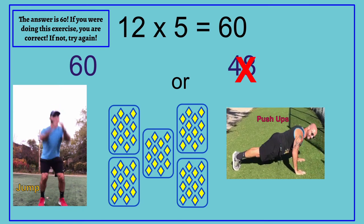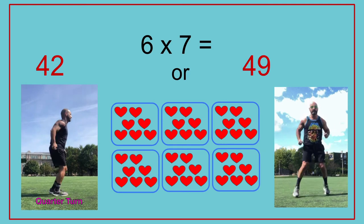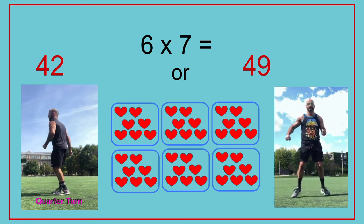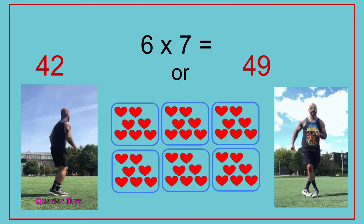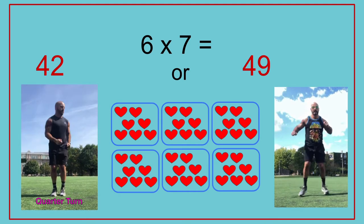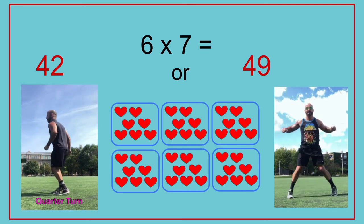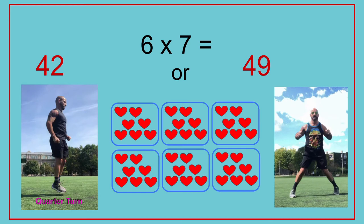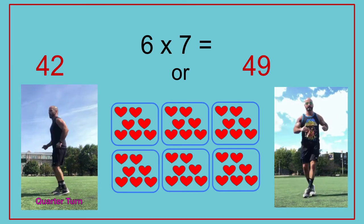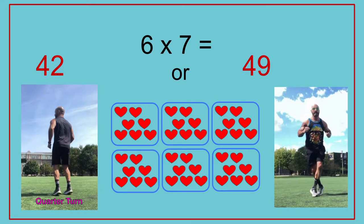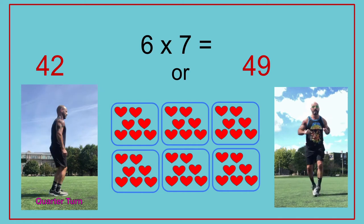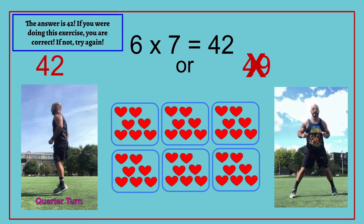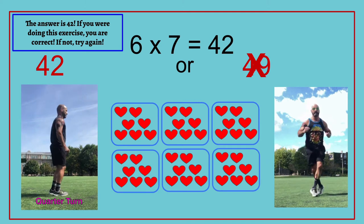6 times 7 equals — 42 or 49? The answer is 42. If you are doing this exercise, you are correct. If not, try again. 6 times 7 equals 42.